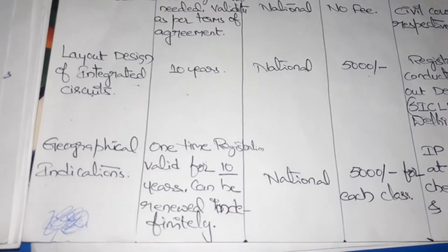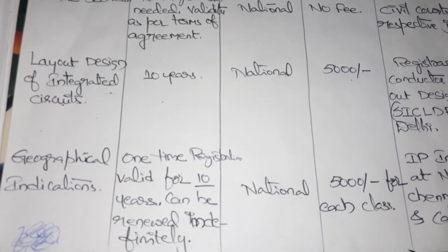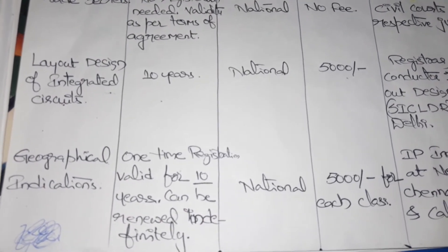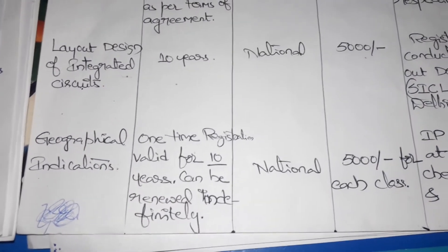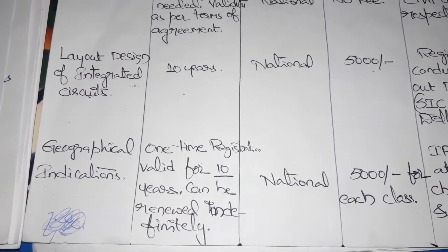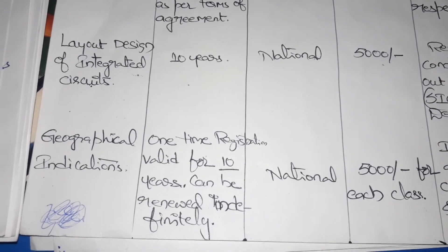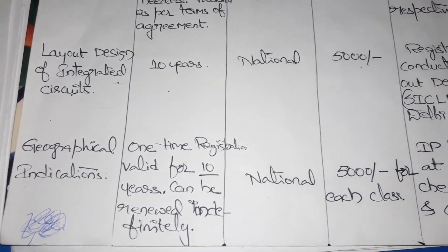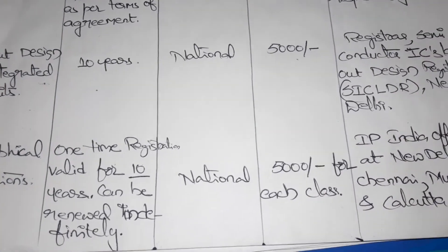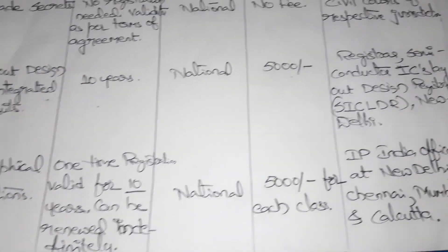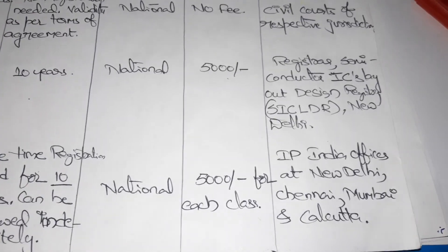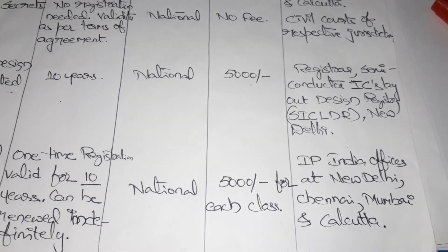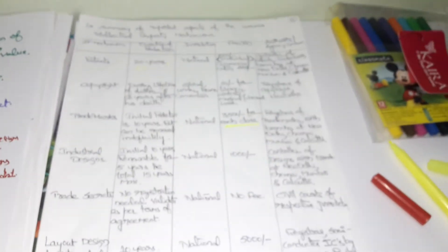For geographical indications, one-time registration is valid for 10 years and can be renewed indefinitely — meaning you can renew it for your lifetime. The fee is 5,000 rupees for each class. Offices are located in New Delhi, Chennai, Mumbai, and Kolkata.